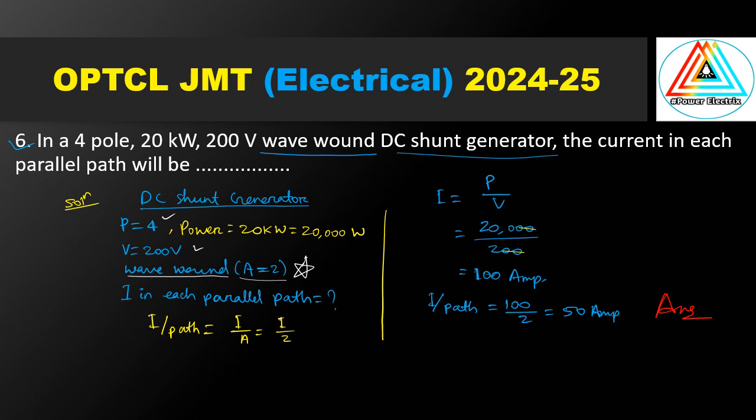Now, I equals power divided by voltage — 20,000 watt divided by 200 volt equals 100 ampere. Total current is 100 ampere. So current per path equals 100 divided by 2 — the answer is 50 ampere.